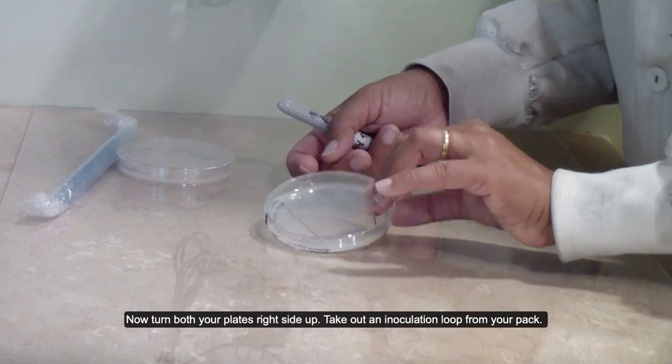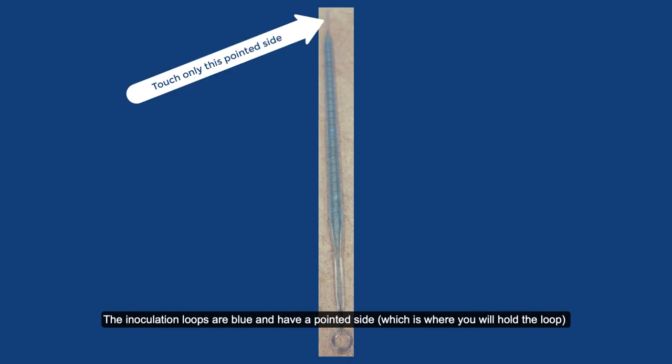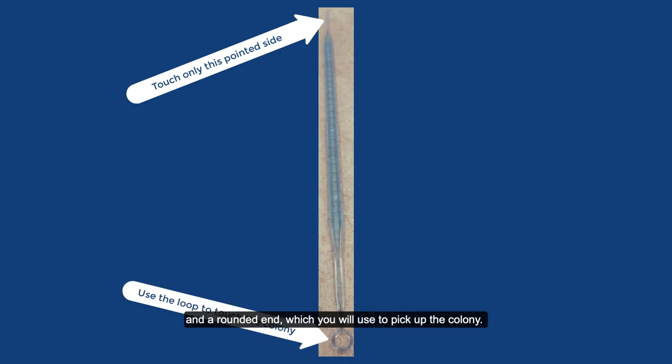Now, turn both your plates right side up. Take out an inoculation loop from your pack. The inoculation loops are blue and have a pointed side, which is where you will hold the loop, and a rounded end, which you will use to pick up the colony.